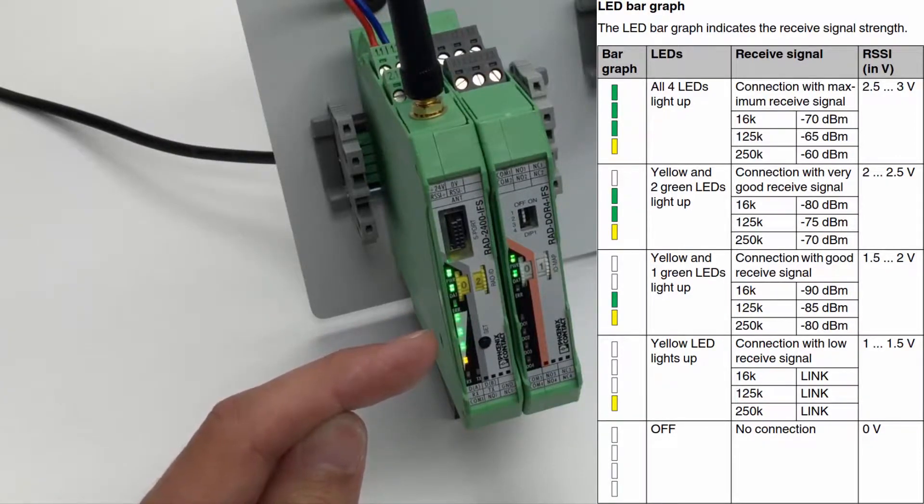The LED bar graph and the RSSI terminal output are associated. For example, three green LEDs indicate an RSSI signal between 2.5 and 3V.